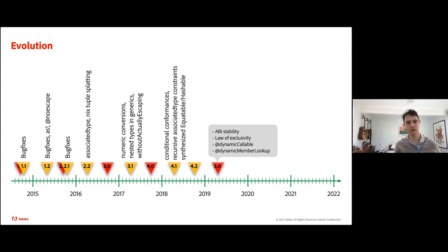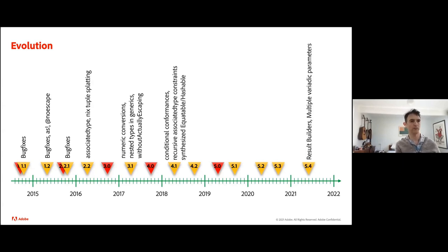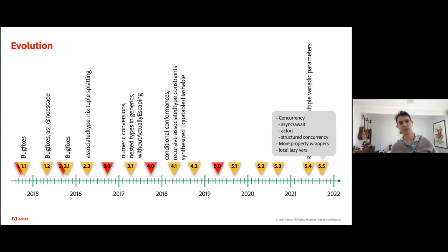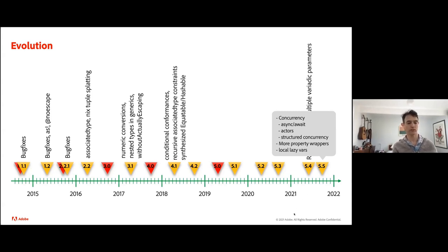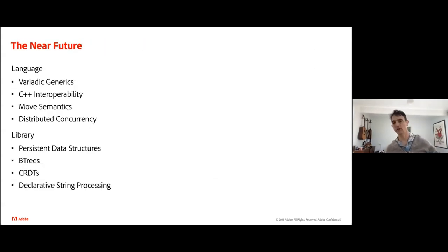Dave briefly covers the Swift timeline, noting there has been a lot happening across many releases — gray boxes indicate features where there wasn't room to label them. He notes Apple seems to be under-investing in development tools relative to their leverage on software quality, though he's been impressed by young, energetic people hired since he left. The latest big effort was concurrency, and C++ interoperability features appear to be in the wings.